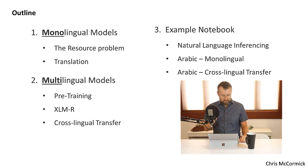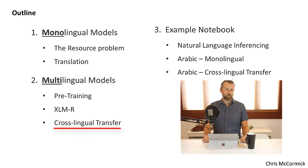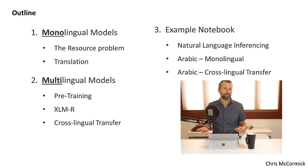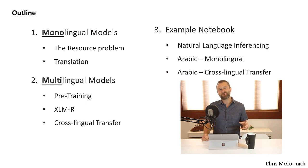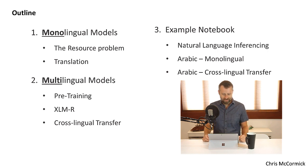We'll look at what a multilingual model is, and then what a multilingual model allows you to do is something that's maybe even more crazy — this concept of cross-lingual transfer learning. In the example code, we'll take a multilingual model and train it to do a particular task using English training data. Then we're going to take that model and apply it to Arabic without actually training it on Arabic text for that task, and we're going to see that it actually does really well.